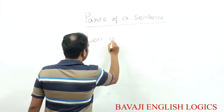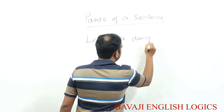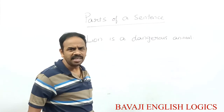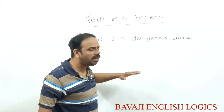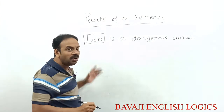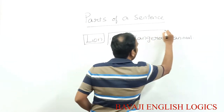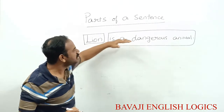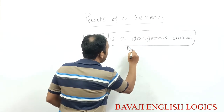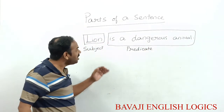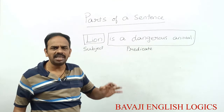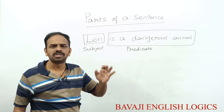For example, 'Lion is a dangerous animal.' What will be the subject and what will be the predicate? We are speaking about Lion, so Lion is the subject. 'Is a dangerous animal' becomes the predicate. Parts of a sentence: every sentence contains two parts. The first part of the sentence is called as Subject, and the second part of the sentence is called as Predicate.